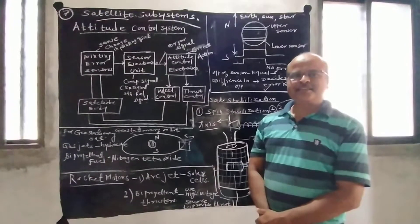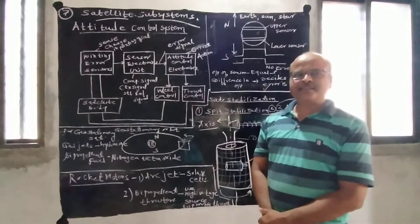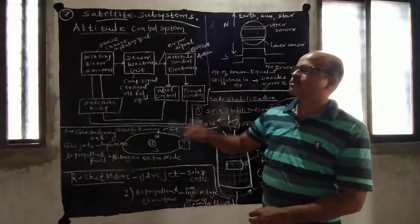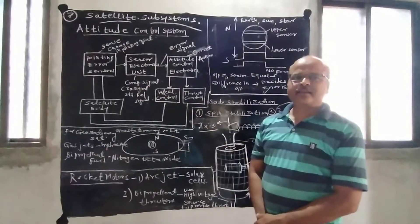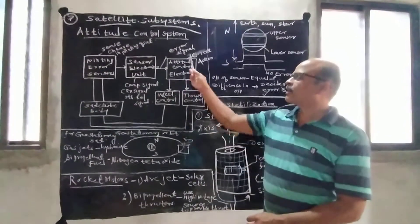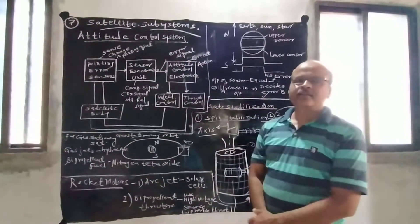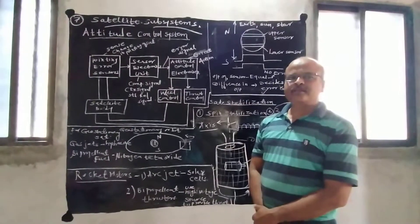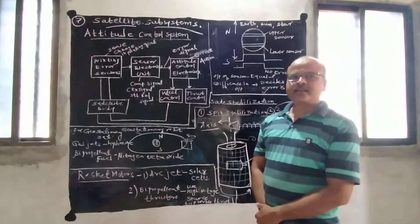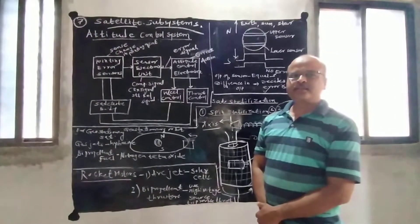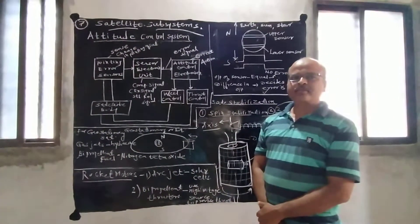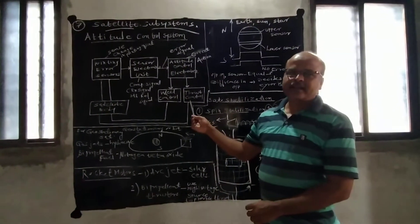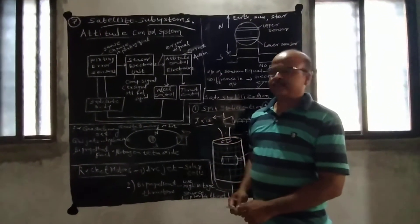Hello students, in this lecture we will study a new chapter: Satellite Subsystem. In this chapter, Satellite Subsystem consists of Attitude and Orbit Control System, Telemetry Tracking and Monitoring System, Command System, and also the Satellite Antenna Subsystem.